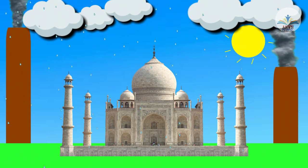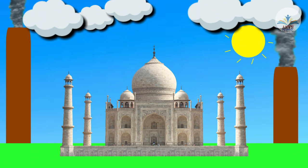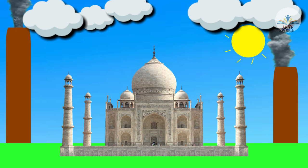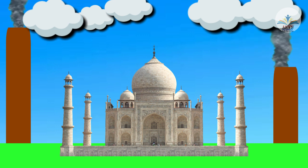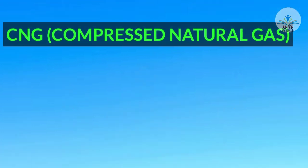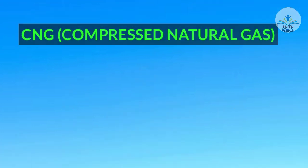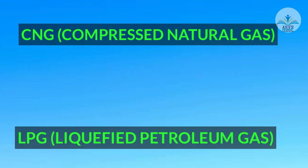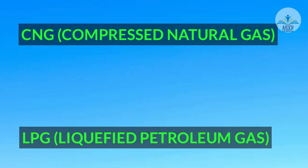How can you save the Taj? Well, the Supreme Court has taken several steps to save the Taj. It has ordered industries to switch from petrol and diesel fuels to cleaner fuels like CNG — compressed natural gas — and LPG — liquefied petroleum gas.